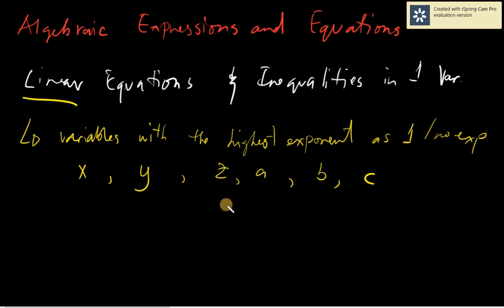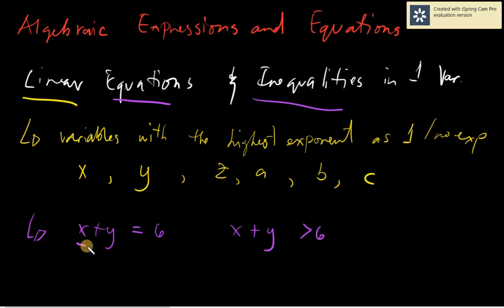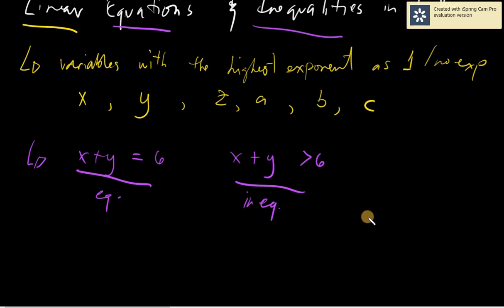Now when we talk about equations and inequalities, we are talking about comparisons between two sides of an equation. For example, you have x plus y equals 6 — that is an equation. And x plus y is greater than 6 — that is an inequality. In inequality, we are dealing with symbols that denote they are not equal, specifically: greater than, less than, greater than or equal, and less than or equal.